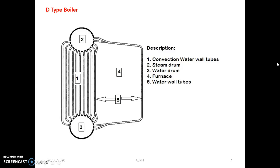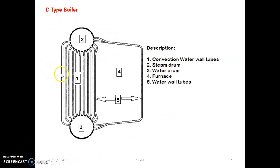Another type of water tube boiler is the D-type boiler, mainly used in sugar factories and process and food processing industries. The pressure capacity is in the range of more than 40 bar up to 60 bar. The name is given because it looks like the letter D shape. It consists of five important components. The first is the convection water wall tubes — in these tubes water is continuously circulating and the rest portion gets surrounded by fire.